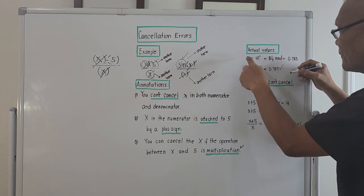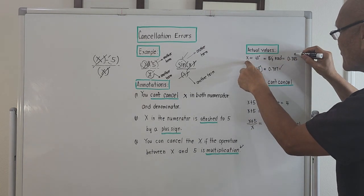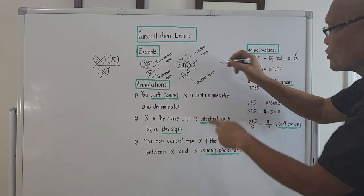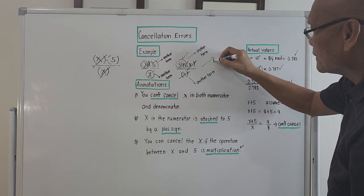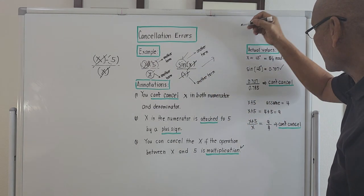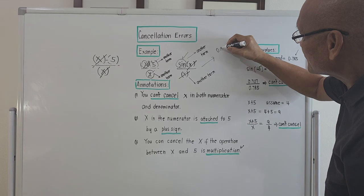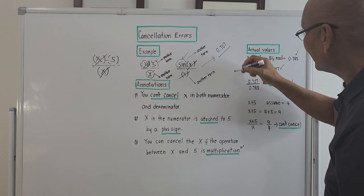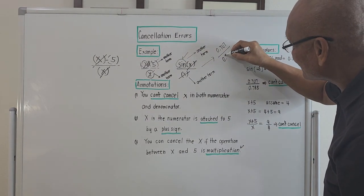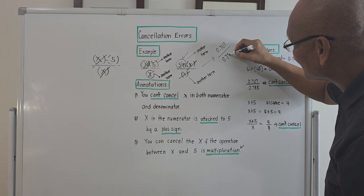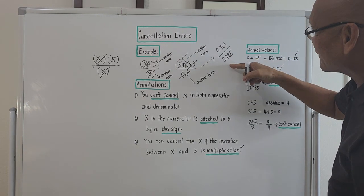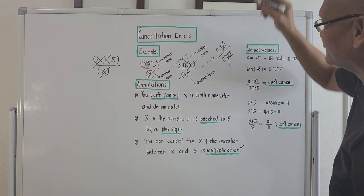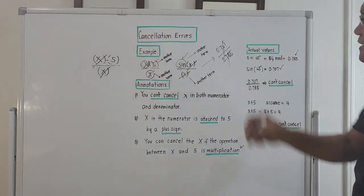The value of x in radians is 0.785. So if we substitute it here, sine x is 0.707 and this is divided by 0.785. They are not the same, so you cannot cancel it.